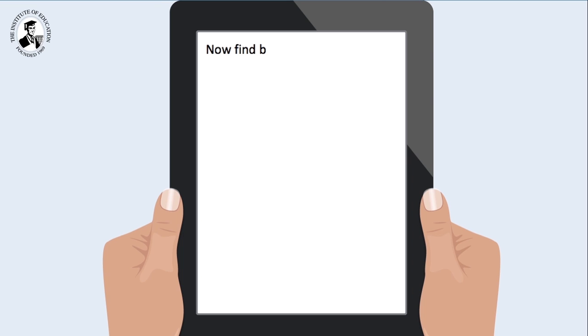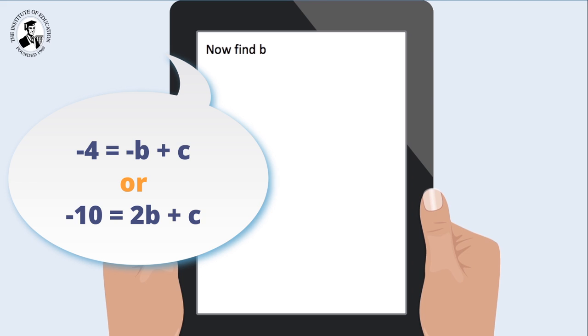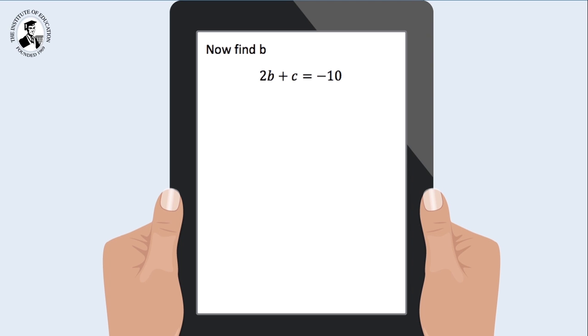To do this, I can use either of the two equations at the top of the screen. So I can sub minus 6 into minus 4 equals to minus b plus c. Or I may choose to use the second, which says minus 10 is equal to 2b plus c. For our purposes, I'm going to use 2b plus c is equal to minus 10. I'm going to replace c with minus 6.